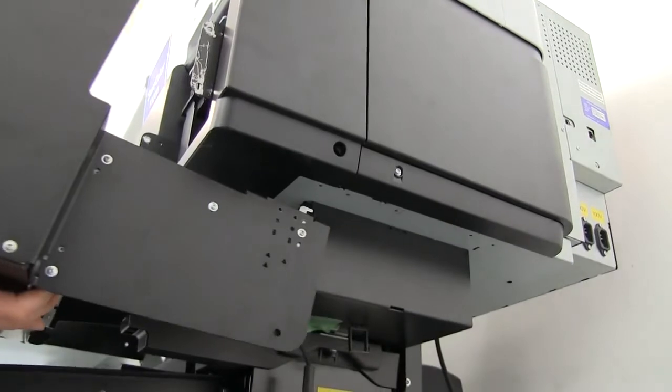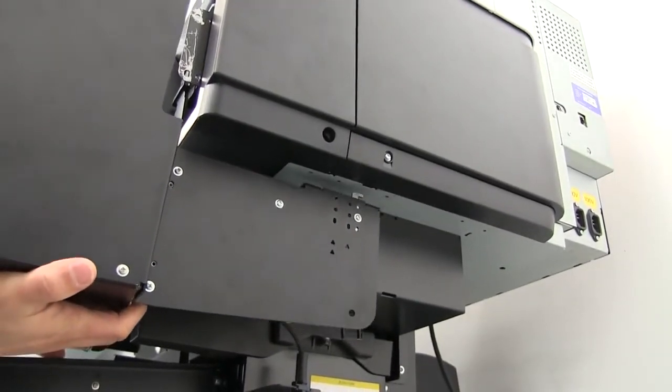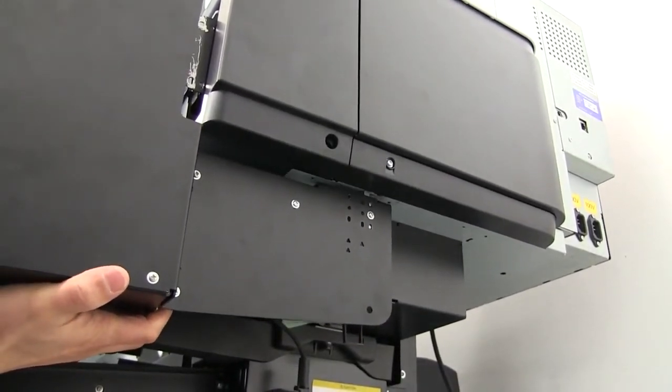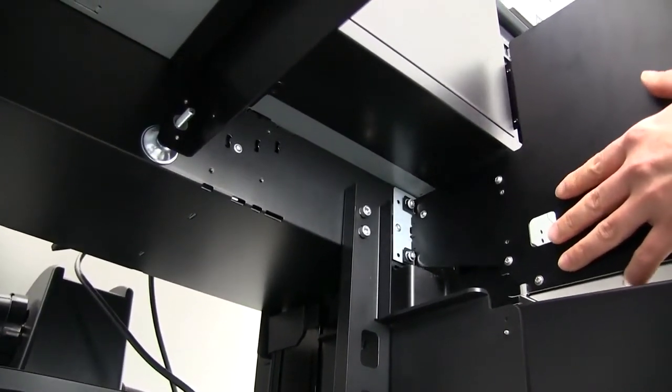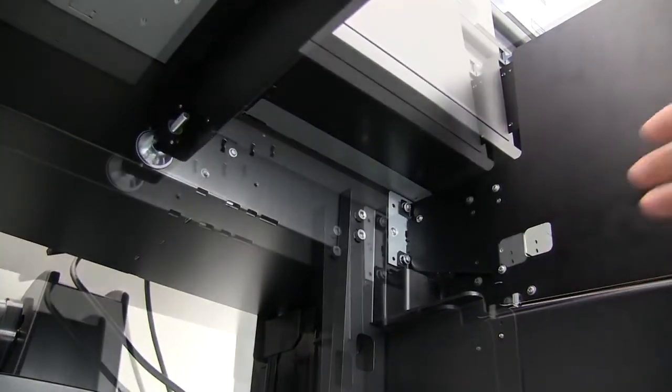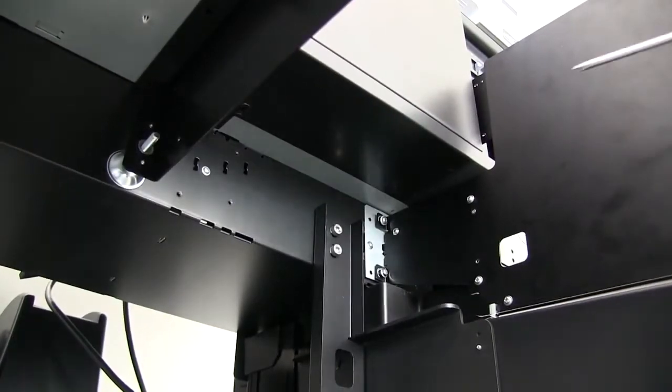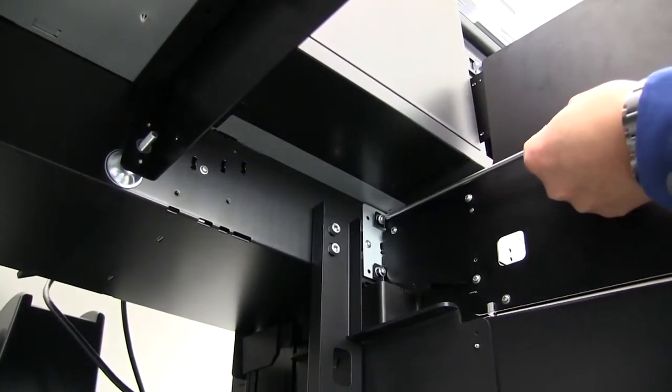Carefully align the hooks on the ink tray assembly to the openings on the printer and ensure that the ink drainage tube passes through the notch on the assembly without being pinched. Secure the assembly to the printer using all four of the U2 type screws.